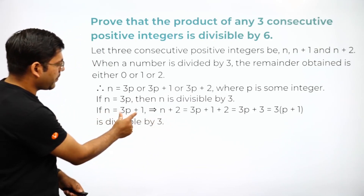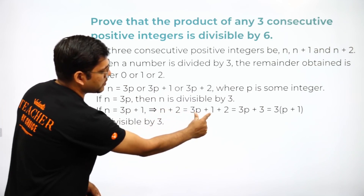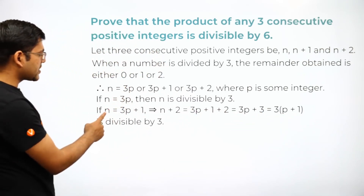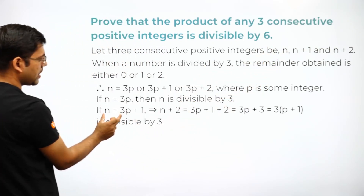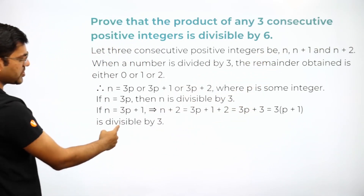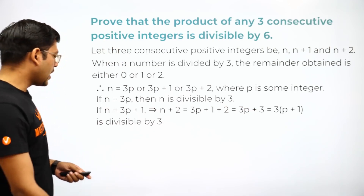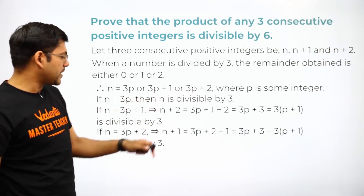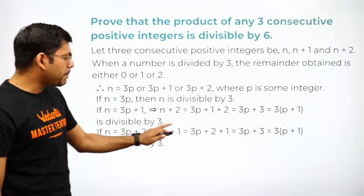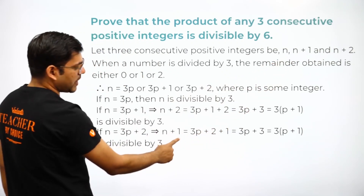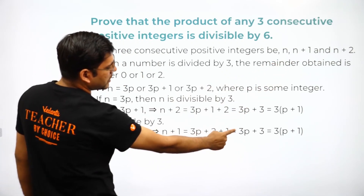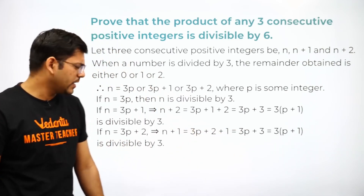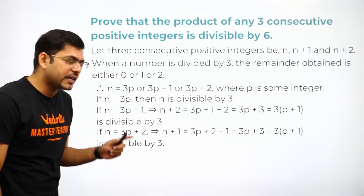If n = 3p+1, then out of n, n+1, n+2, the third number n+2 becomes 3p+1+2 = 3p+3, where 3 is common, so n+2 is divisible by 3. In the third case, if n = 3p+2, then n+1 = 3p+2+1 = 3p+3, which is again divisible by 3.